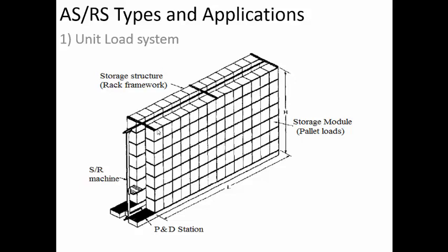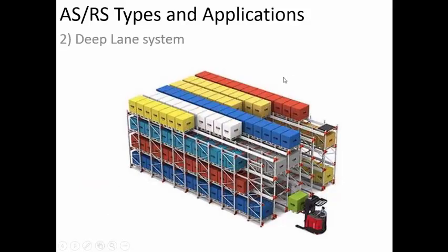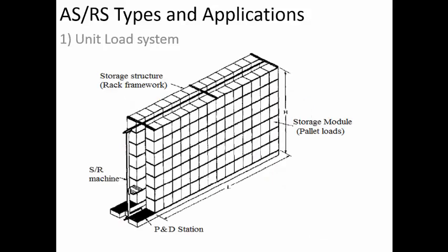The main advantage of the unit load system is the accessibility of each and every component — a large variety of components can be stored. The main disadvantage is that because of the different sizes and shapes of components, the racks have a limitation; it may not be efficient to place components back in a given space. However, any number of different products can be stored because each of them can be individually accessed.